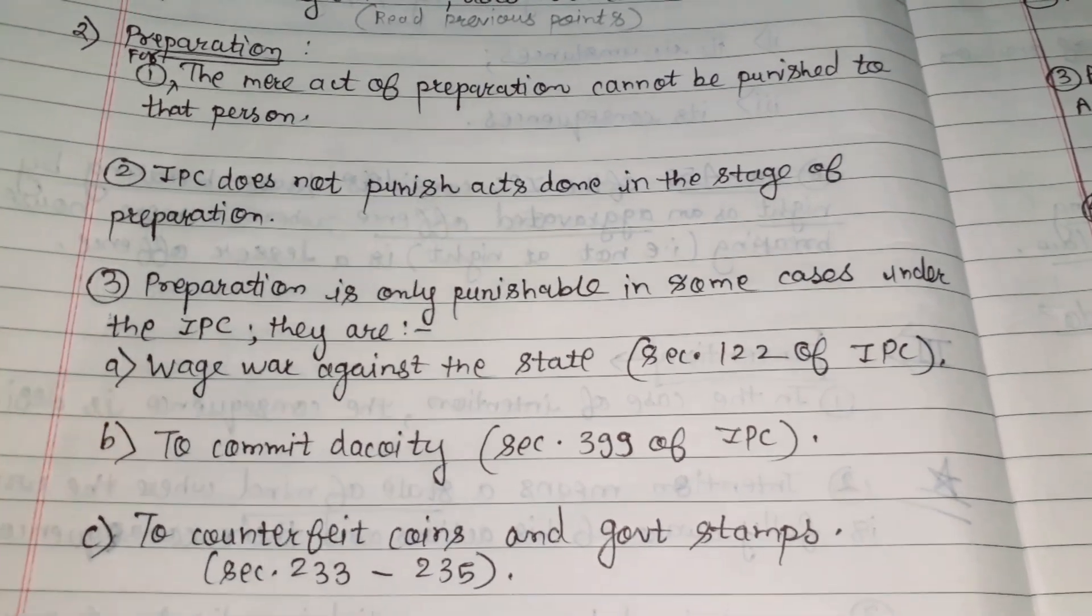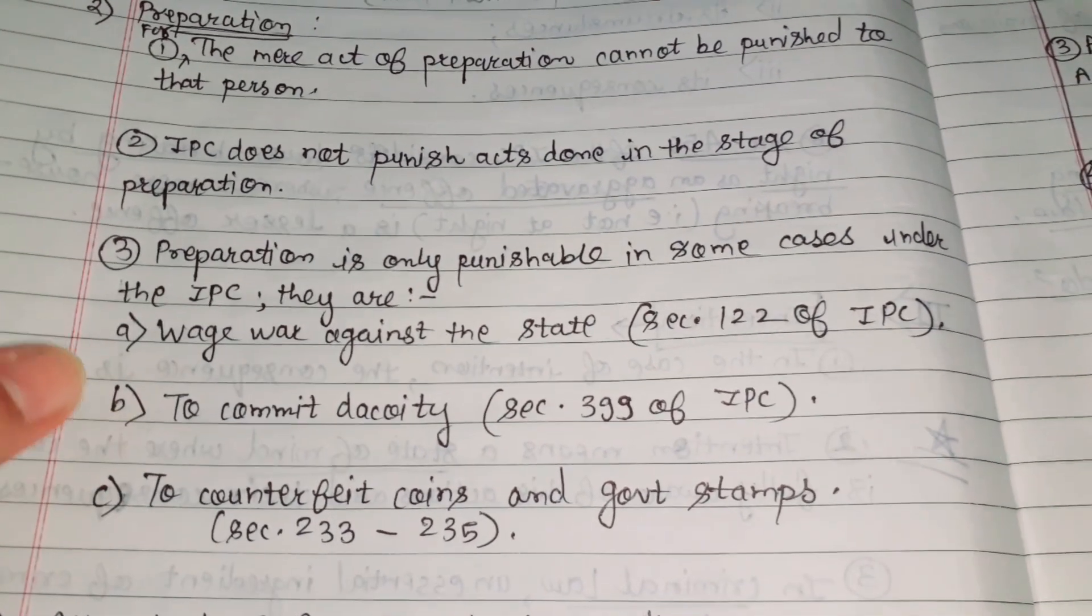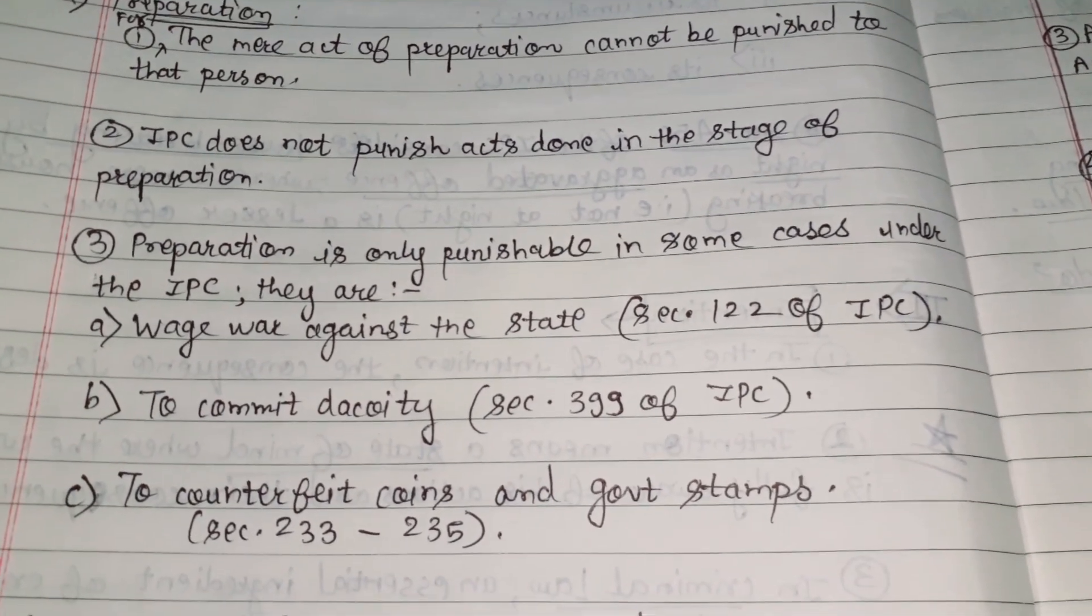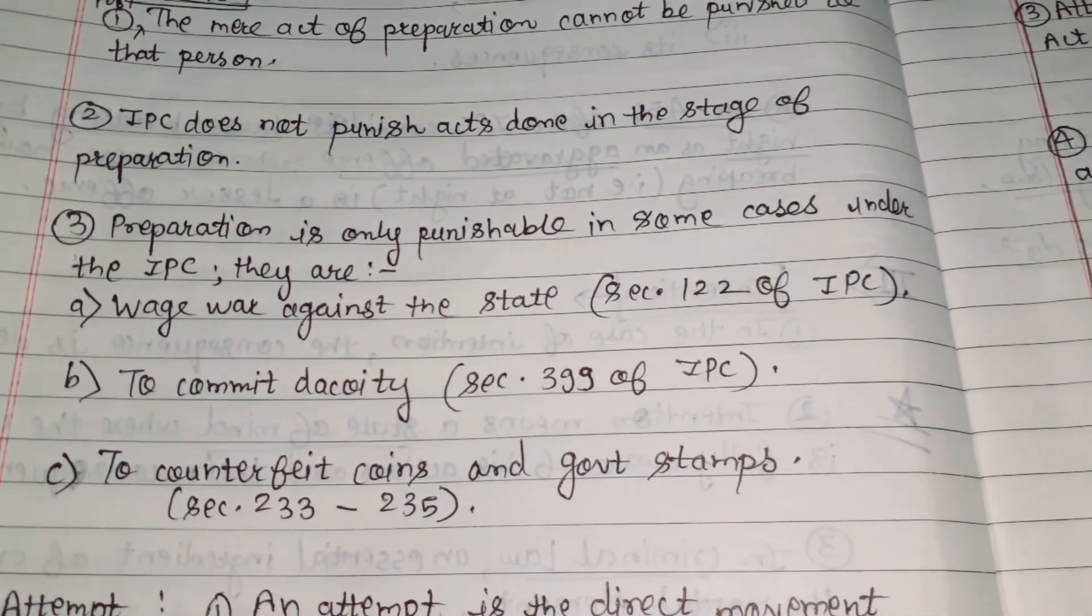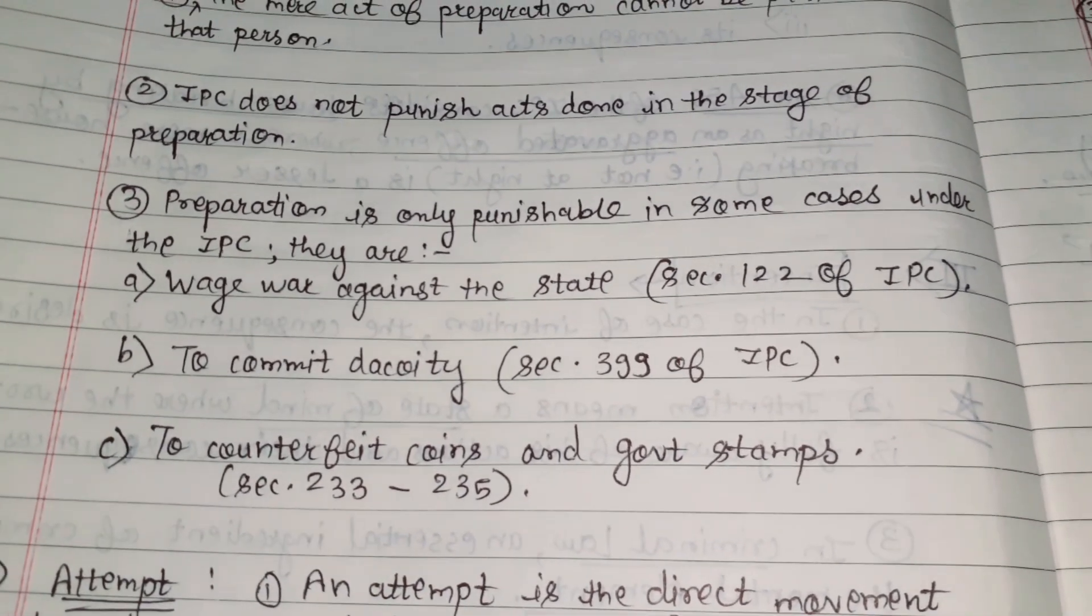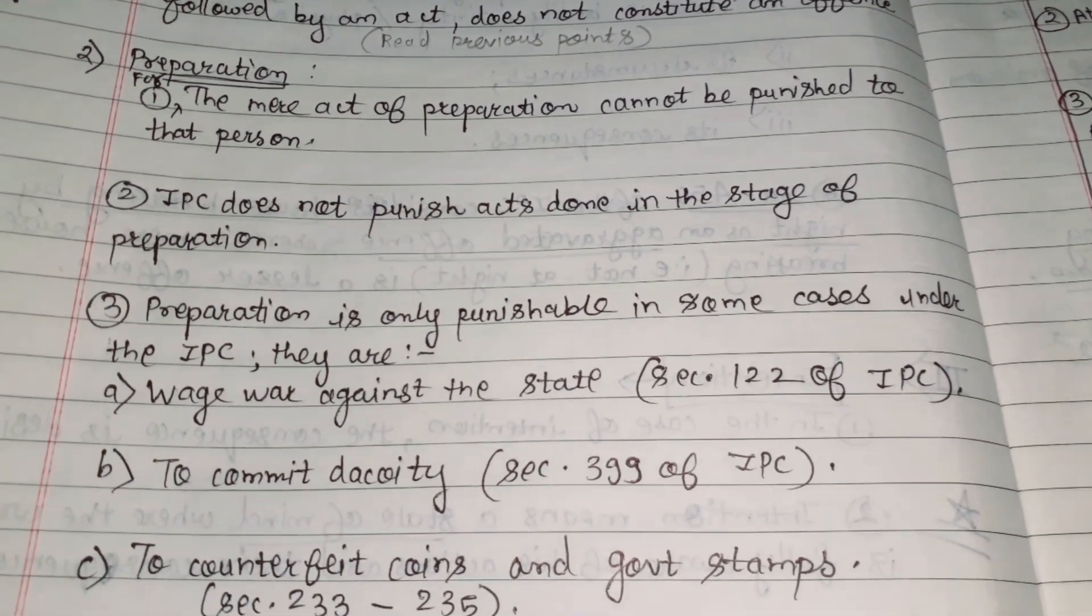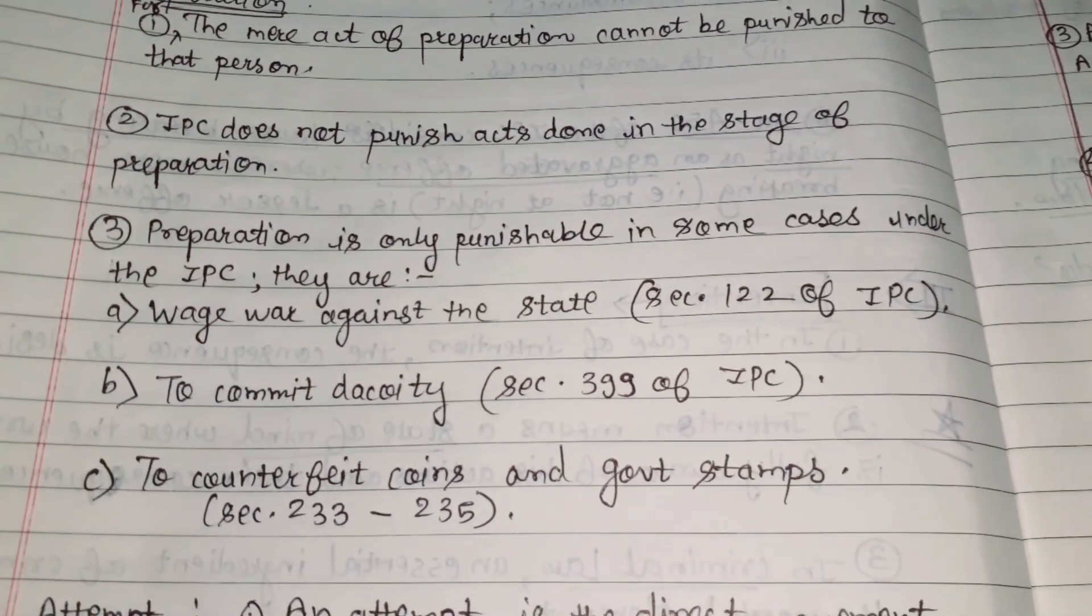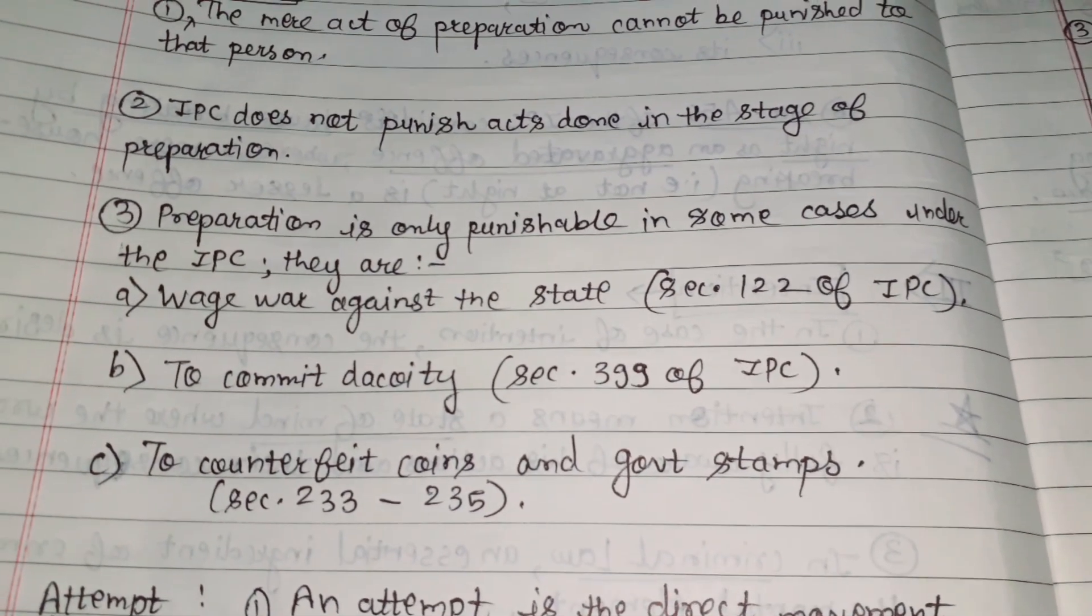First is to wage war against the state, that is Section 122 of IPC. Second is to commit dacoity, Section 399 of IPC. And third is to counterfeit coins and government stamps, Sections 233 to 235. So for preparation, IPC or the government does not give punishment, but in these certain cases the person can be held liable for the preparation of that crime.